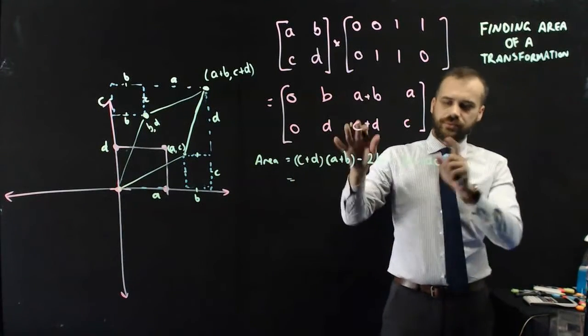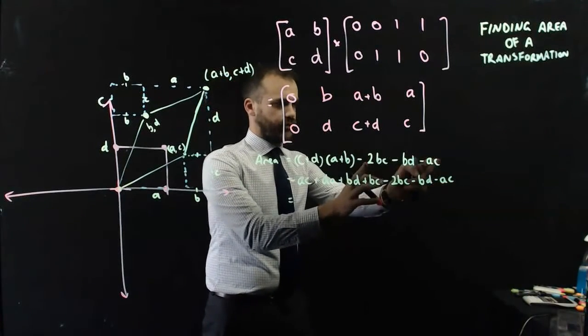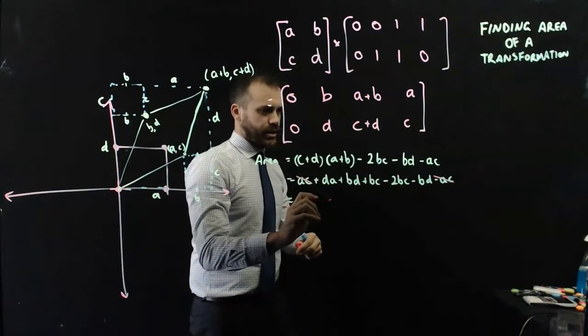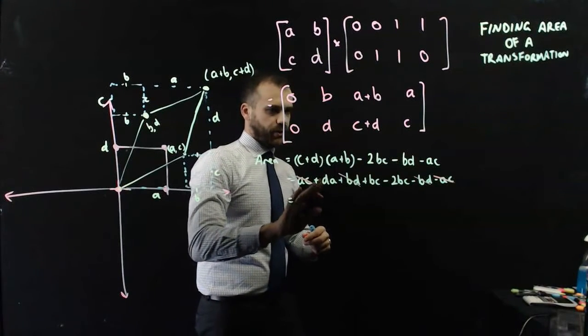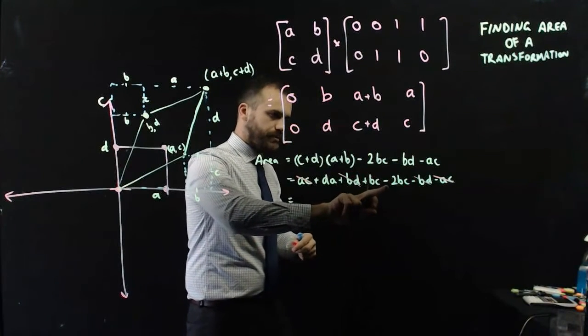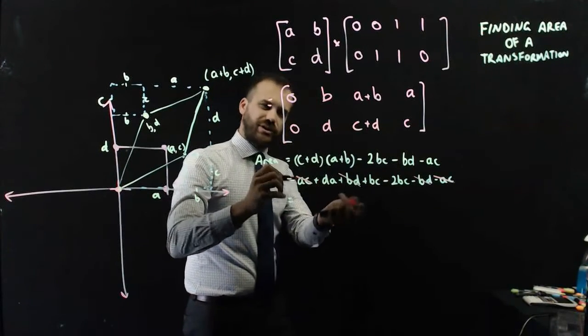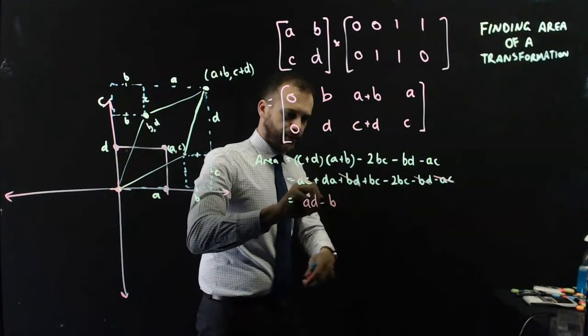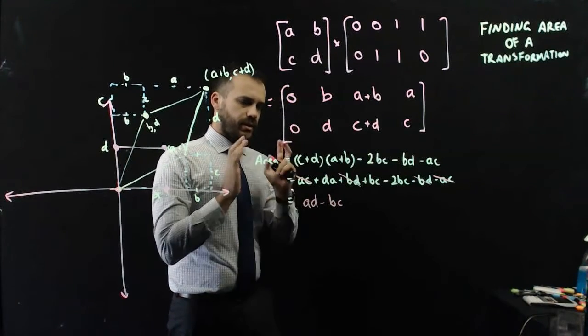And now I'll just sort of go through the motions here. So I just expanded that bracket there, and I've still got all of this stuff here. And now I can start canceling stuff out. AC, negative AC. BD, negative BD. I've got a DA, a BC, and a negative 2BC. So BC minus 2BC is minus BC. So what I get is DA. I really should write that as AD minus BC.